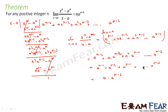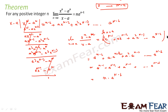Why is it n terms? If you see, we started with x^(n-1), which corresponds to a^0. So the power of a goes from a^0 to a^(n-1). From 0 to n-1 that is n terms. So this becomes n times a^(n-1), which is n·a^(n-1). And that is what we are supposed to prove: the limit of (x^n minus a^n) divided by (x minus a) as x tends to a is n·a^(n-1).